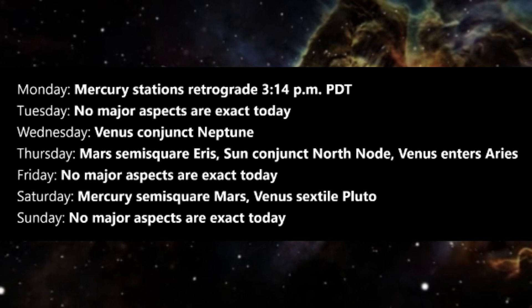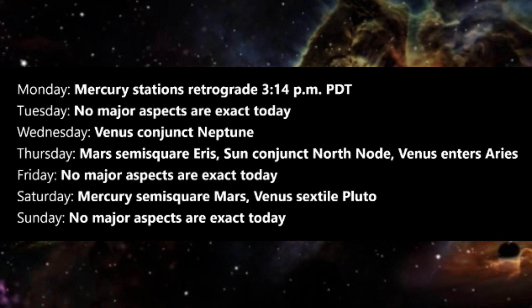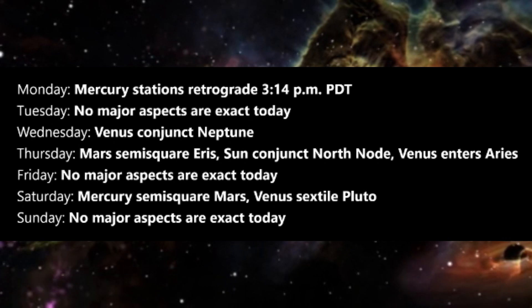This alignment highlights the current evolutionary growth path for humanity, and also activates the energies of next Monday's total solar eclipse. With the North Node in Aries, we are shown that being true to oneself is a vital part of spiritual growth.